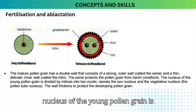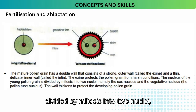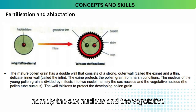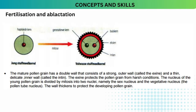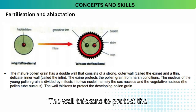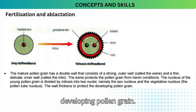The nucleus of the young pollen grain is divided by mitosis into two nuclei: namely the sex nucleus and the vegetative nucleus, also called the pollen tube nucleus. The wall thickens to protect the developing pollen grain.